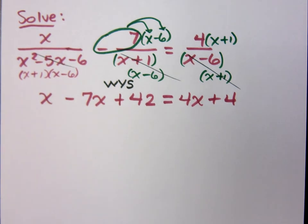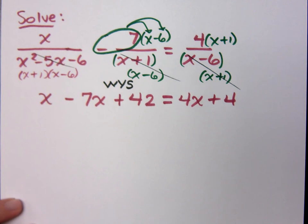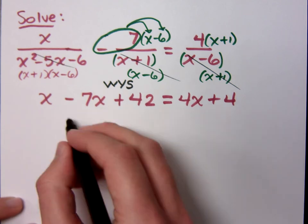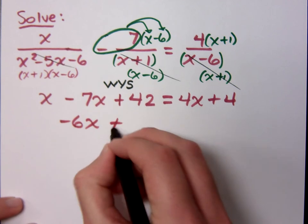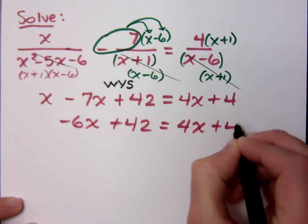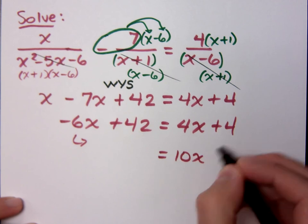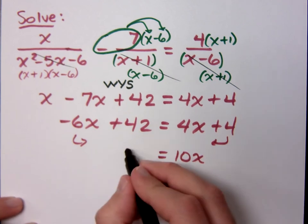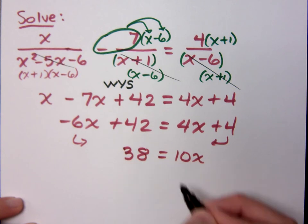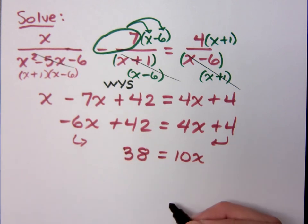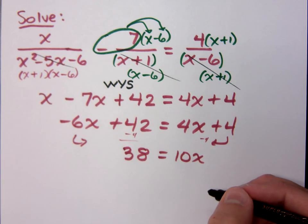That means you get all the variables to one side, constants to the other. So how do I do that? Maybe we should clean this up. This is negative 6X plus 42 equals 4X plus 4. If I move the X's to the right and the 4 to the left, what do I get? 38 equals 10X. Well, you get negative 38 if you do it the other way. Yeah, it's, you know, four and one half dozen the other.